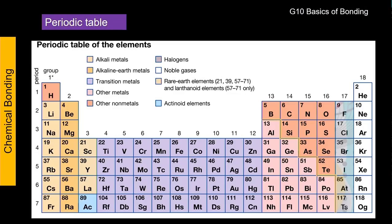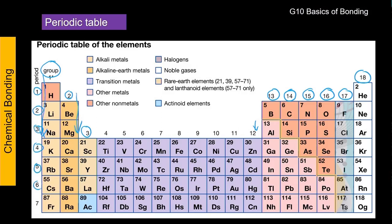We have groups. The groups are read along — so group one, group two, group three, and so on, all along here. These are the groups going down: group 13, 14, 15, 16, 17, and 18. The periods are on this side: one, two, three, four, five, six, seven — and they are read the other way.